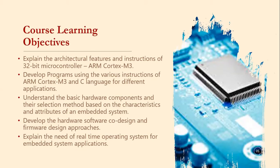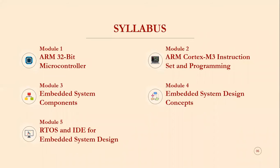There are five modules in the syllabus. Module 1 is ARM 32-bit Microcontroller; Module 2 is ARM Cortex-M3 Instruction Set and Programming; Module 3 is Embedded System Components; Module 4 is Embedded System Design Concepts; and Module 5 is RTOS and IDE for Embedded System Design. The first two modules cover the ARM Cortex-M3 microcontroller, and the remaining three cover embedded systems concepts.